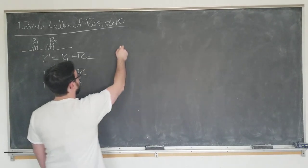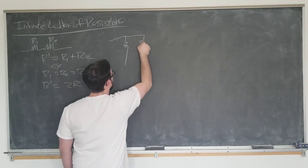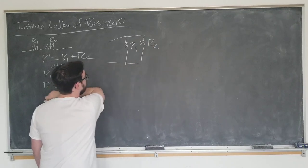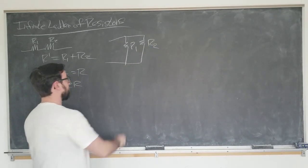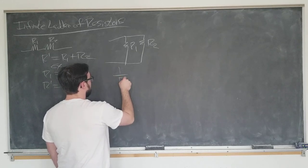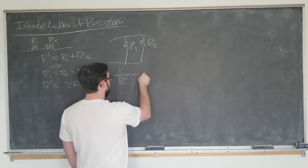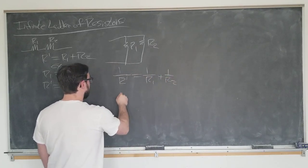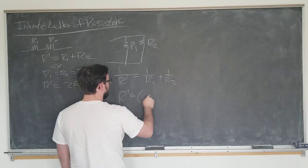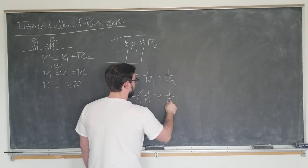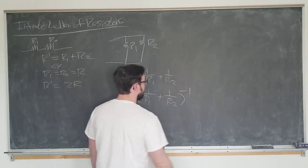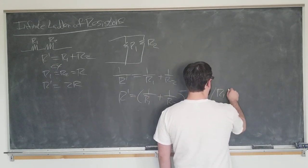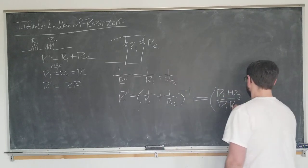And let's talk about the parallel combination as well. R1 and R2 in parallel as follows. In this configuration, the inverse equivalent resistance 1 over R' is defined as 1 over R1 plus 1 over R2, which we can simplify as R' equals the inverse of 1 over R1 plus 1 over R2, which after taking common denominator is the same as R1 plus R2 over R1 R2.